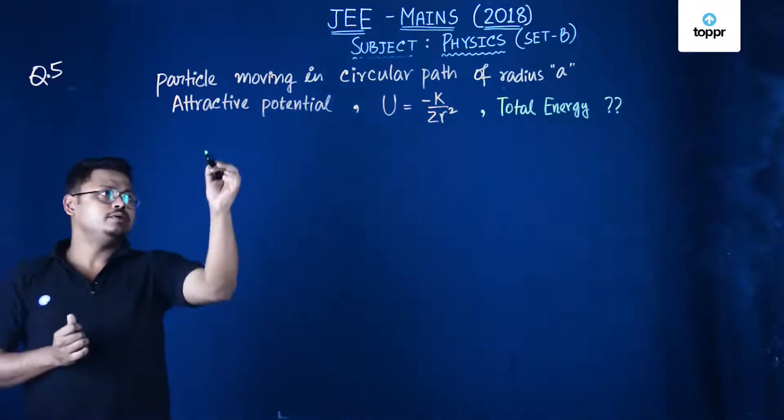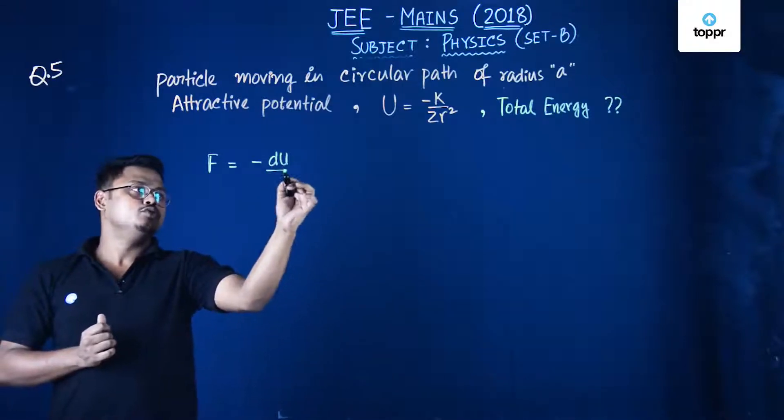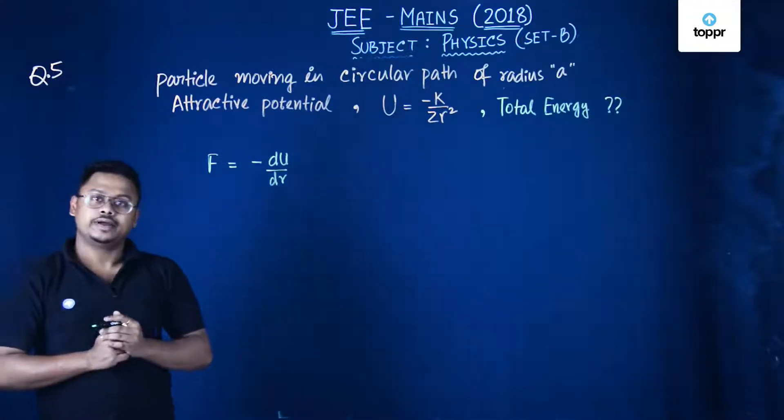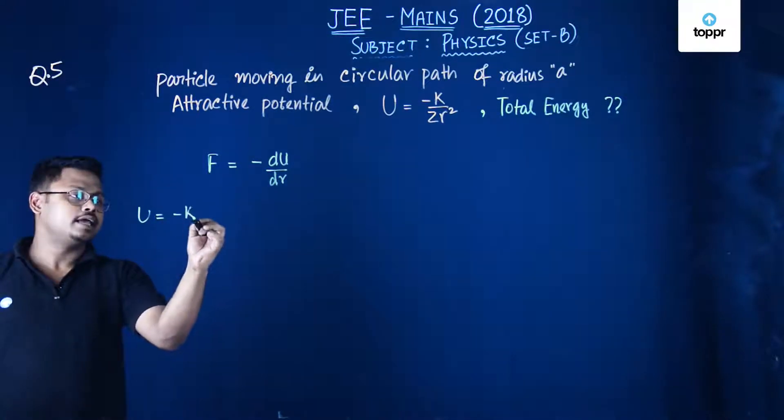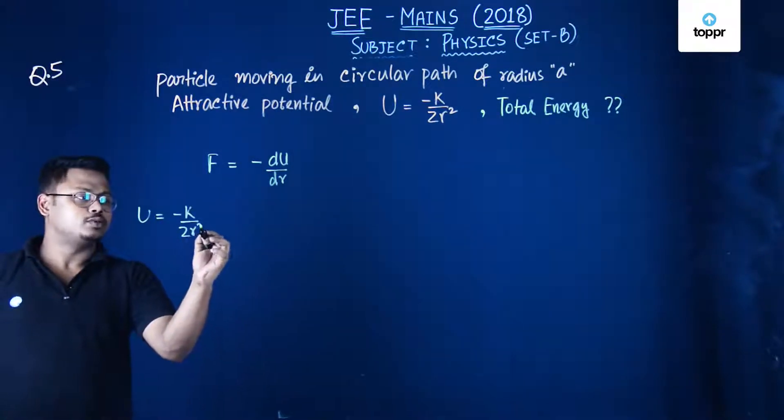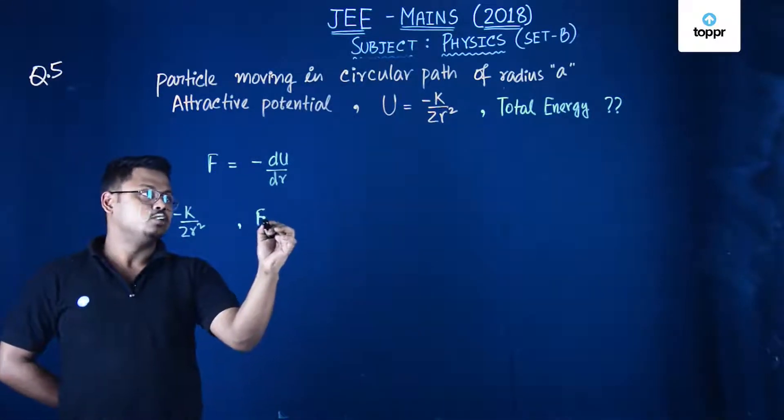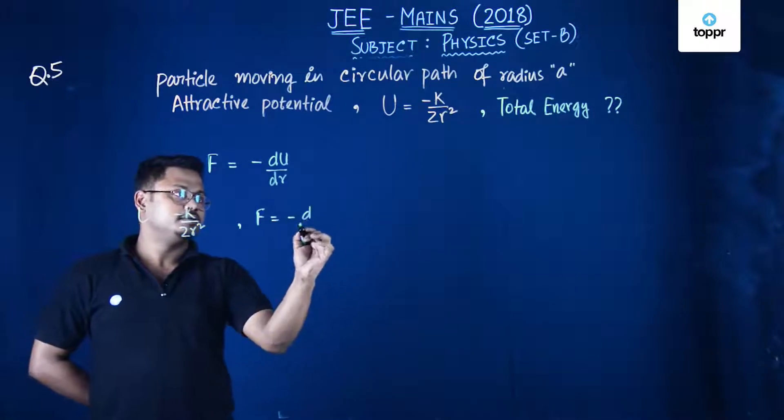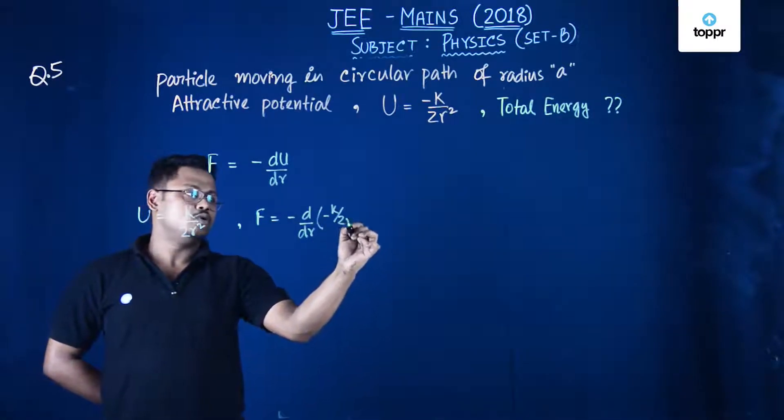So we know that we can write force equals minus dU dr. Here U is given by U equals minus k upon 2r square. This is the potential energy. So if you do F equals minus d dr into minus k upon 2r square.